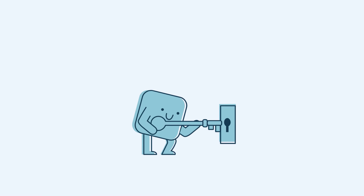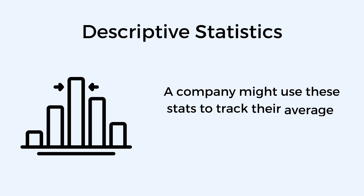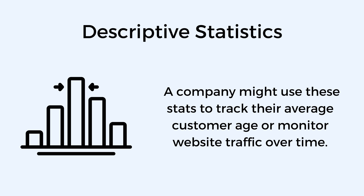Descriptive statistics are used to summarize and describe data. Think of mean, median, mode, standard deviation, and variance. Descriptive statistics help identify trends and patterns in data. For instance, a company might use these stats to track their average customer age or monitor website traffic over time.